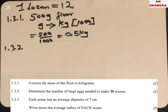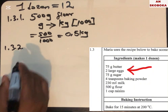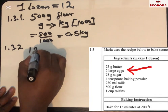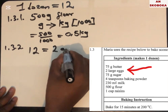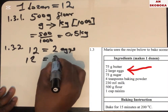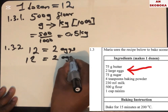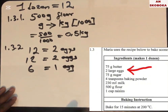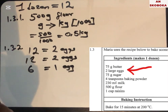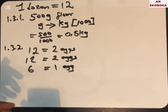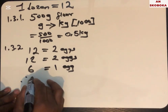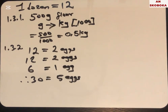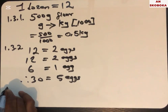Question 1.3.2: determine the number of large eggs needed to make 30 scones. We know that 12 scones need 2 eggs. Another 12 needs 2 eggs, and 6 scones need 1 egg. So 12 + 12 + 6 = 30 scones, requiring 2 + 2 + 1 = 5 eggs.